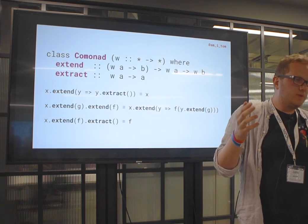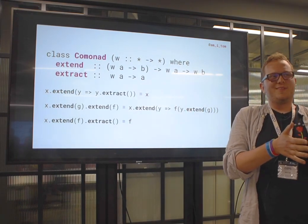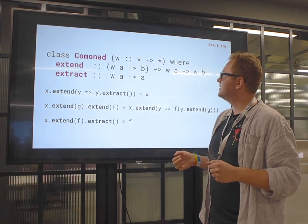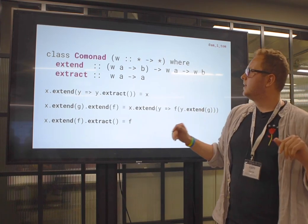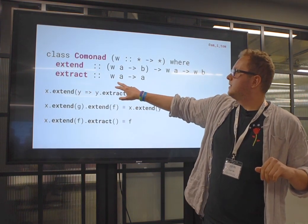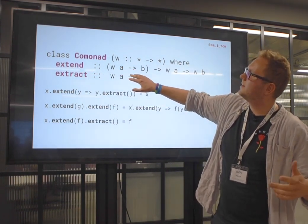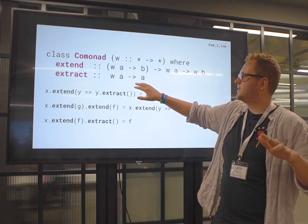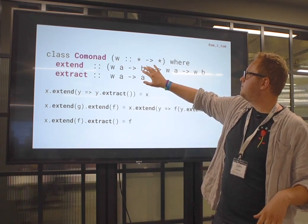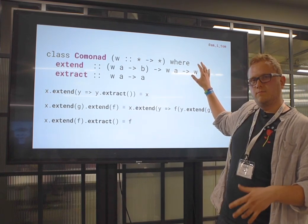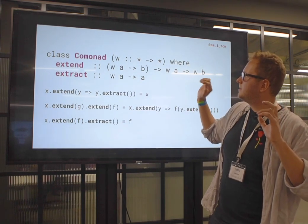Think of it like an array — you don't have 'an array,' you have 'an array of ints.' If you've worked with Elm-type stuff, you have a Maybe of a String, a Task of whatever. It's a thing with 'of' in the middle — that's the formal definition. A comonad has two operations: 'extract,' which takes the value out of the container, and 'extend.' Let's call it a context — the W describes the context around the value inside it.